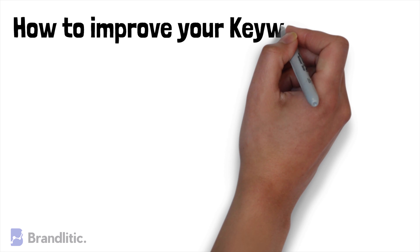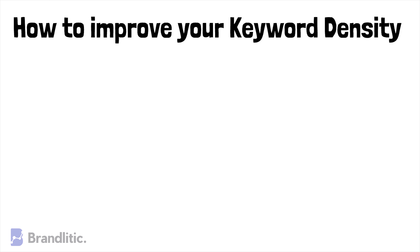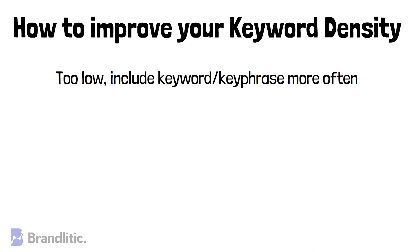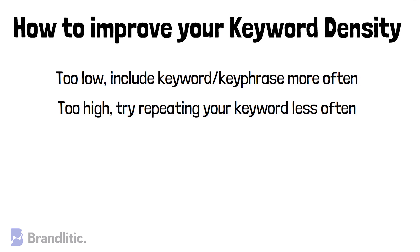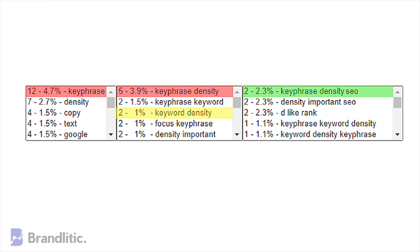If your key phrase density score is too low, you should use the key phrase more often in your text copy. Use various tools to check your copy and make sure you make clear what you're writing about. Stay on your topic and never stray from your niche. But if the key phrase density is too high — higher than 3% — you are using your key phrase too often. Try repeating your keyword less often, as your content could be marked as spam by search engines. The ones marked in red are over-optimized with a keyword density of more than 3%.